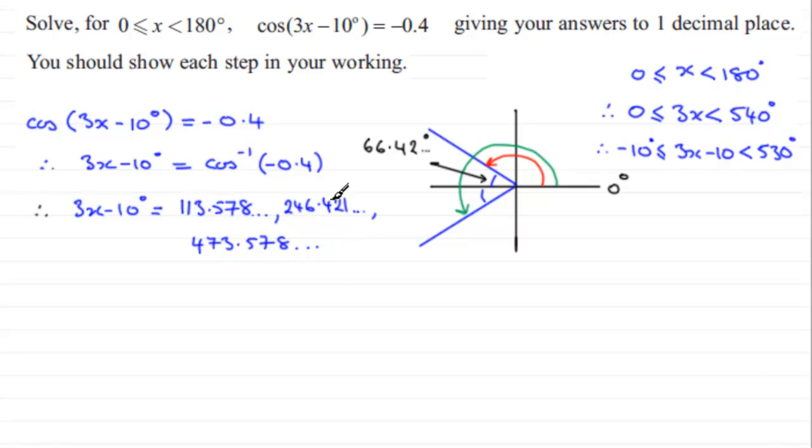If I was to add 360 degrees to the next angle, this green one here, you'd find that I go outside the range of 530 degrees, so I've just got these three solutions.